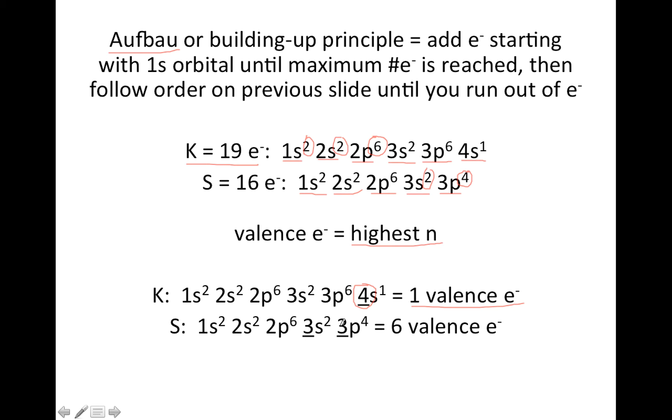But if you look at sulfur, this orbital here and this one have 3s in front, so the total number of electrons in what we call the third principal level, or third shell, sometimes people use that term shell, there's six total electrons. So you would say there's six valence electrons for sulfur.